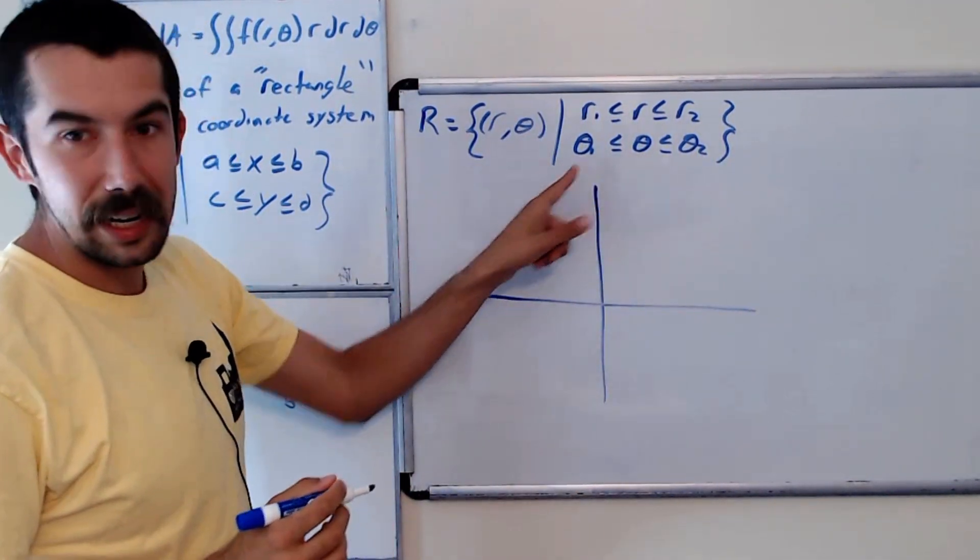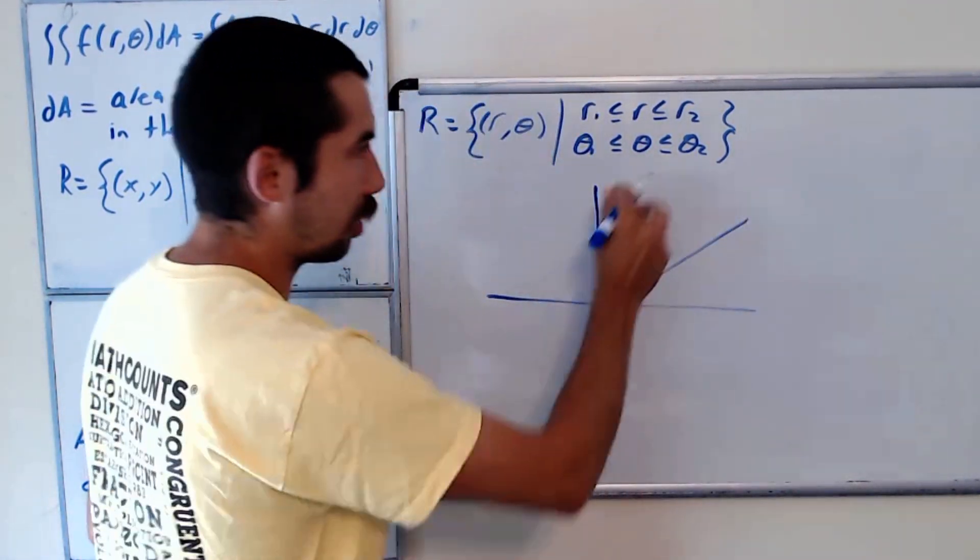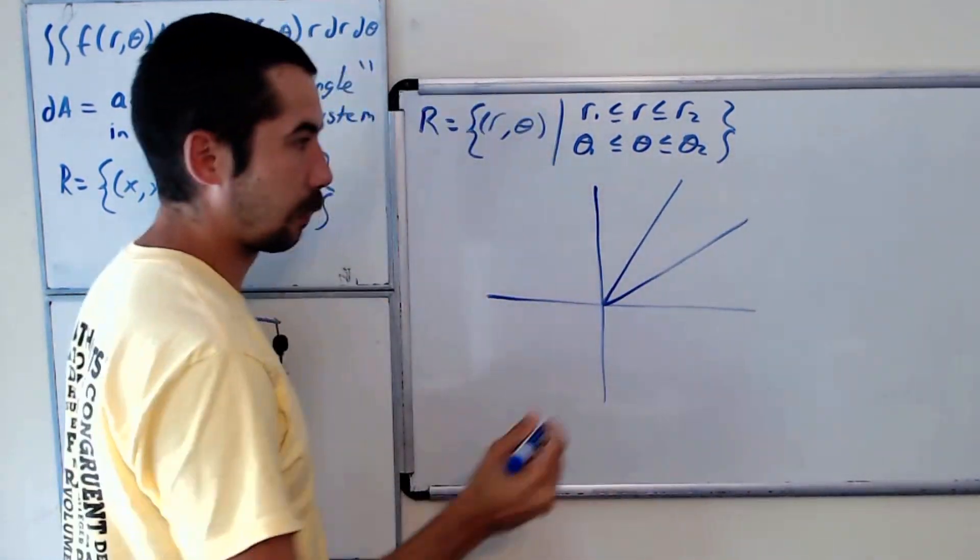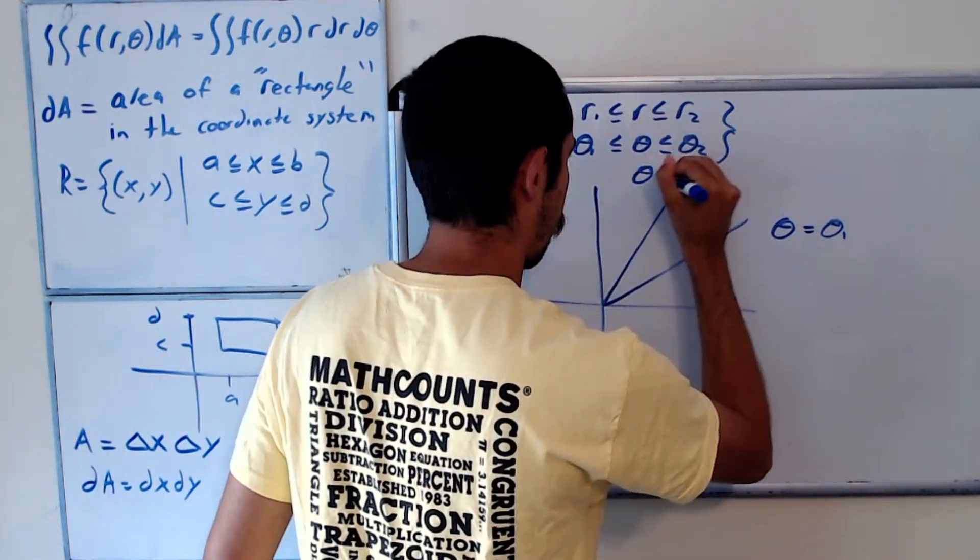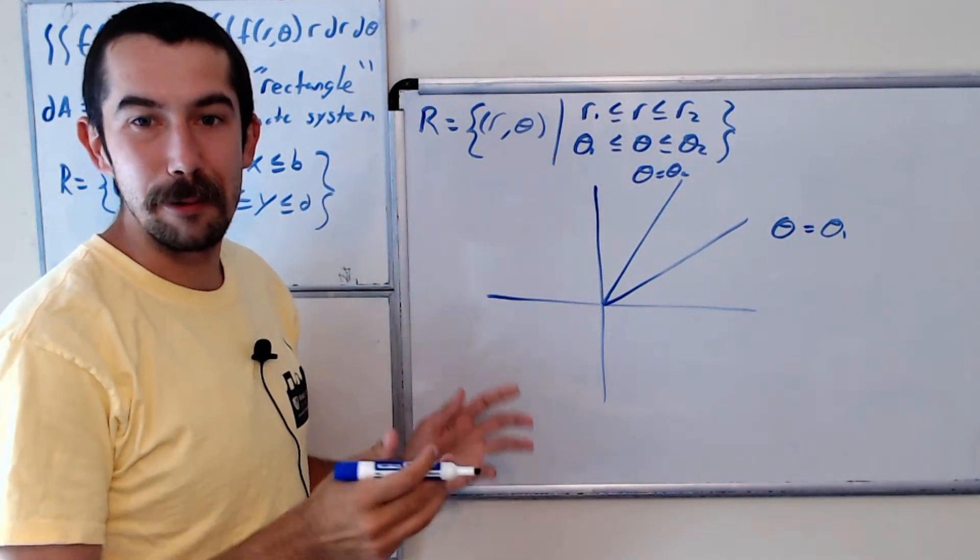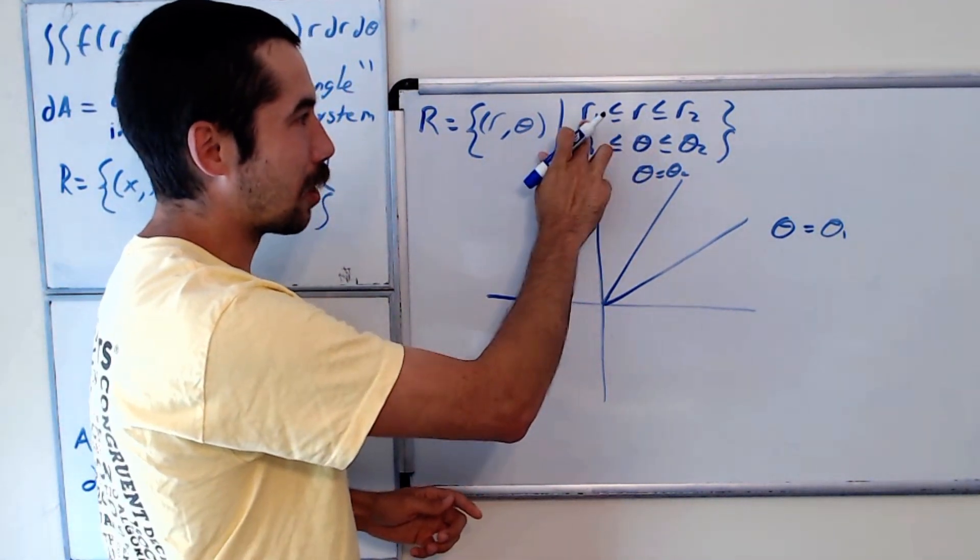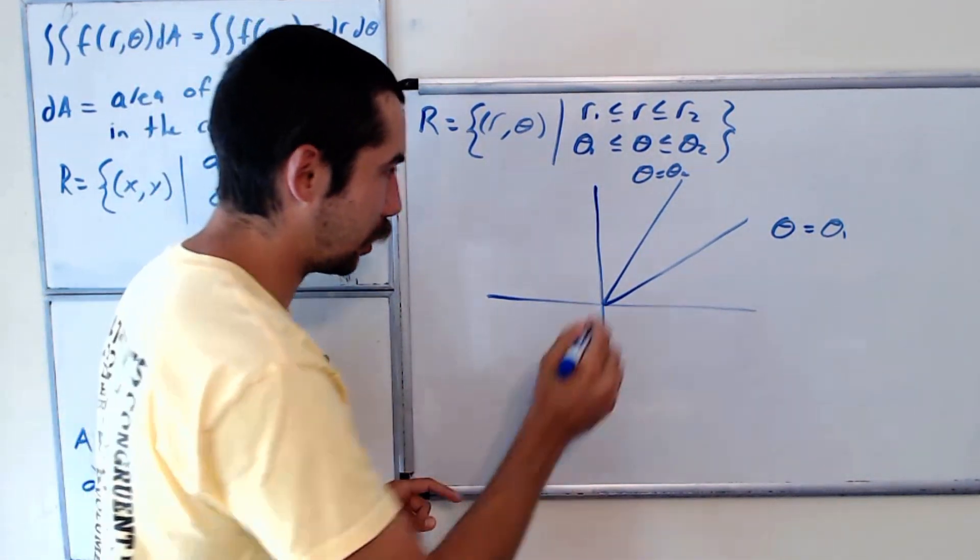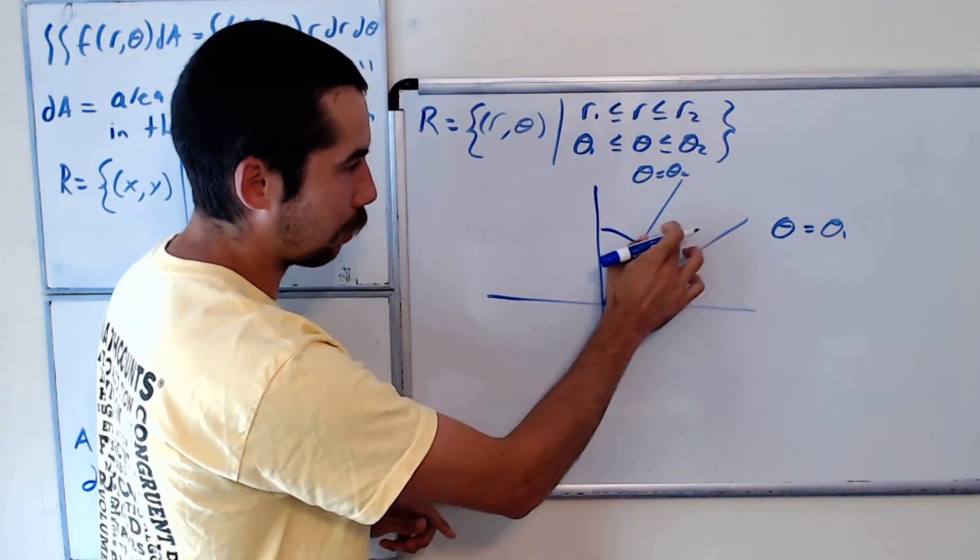So let's get a nice sketch going. The line theta equals theta1 is just going to be a ray out of the origin. And similarly, theta equals theta2 is also a ray out of the origin. The line r equals r1, I know I'm using the term line, but the equation r equals r1 is going to be a circle with radius r1 centered at the origin.